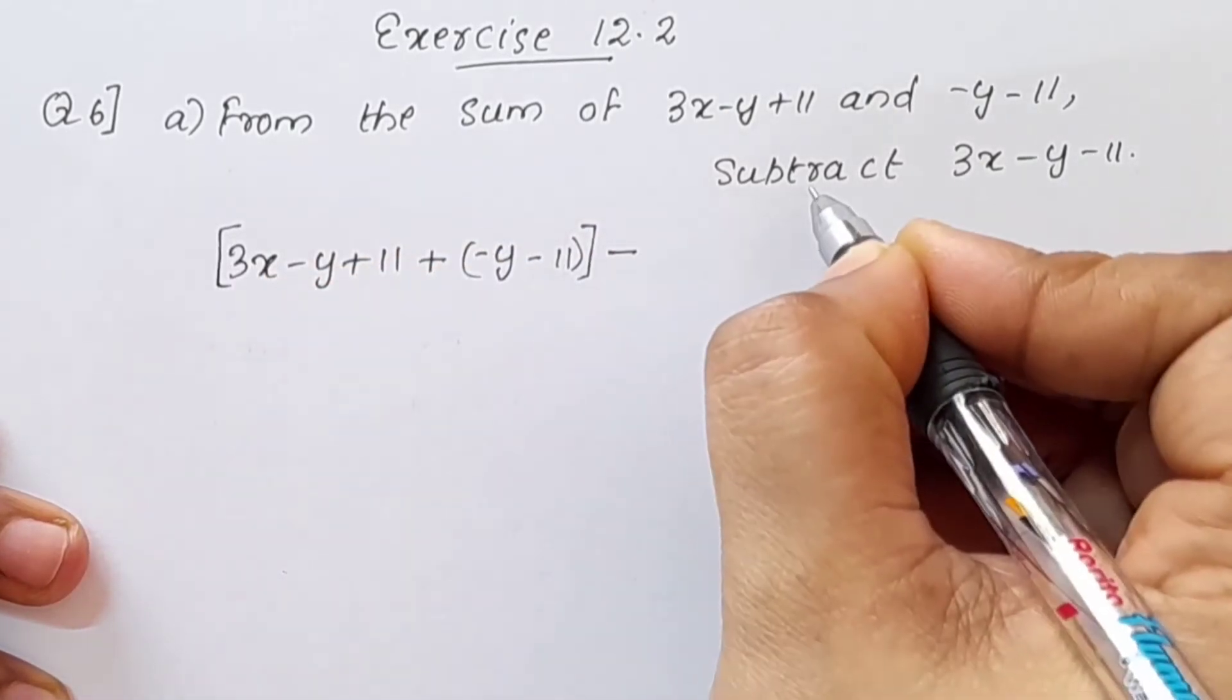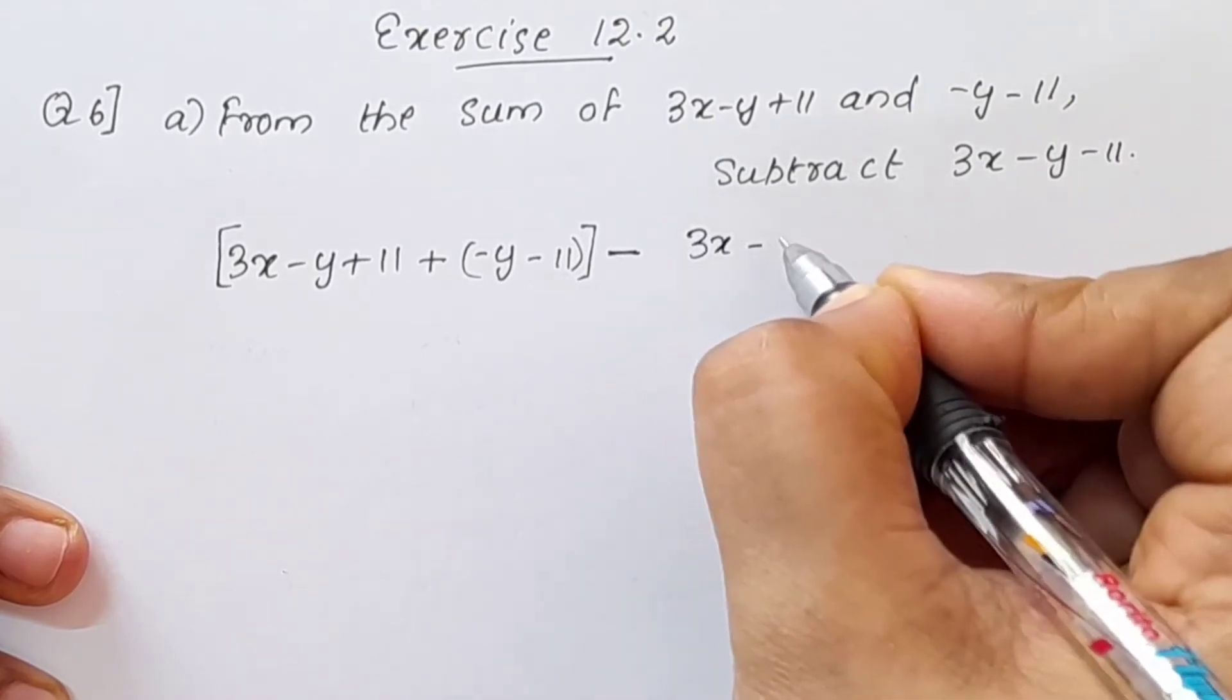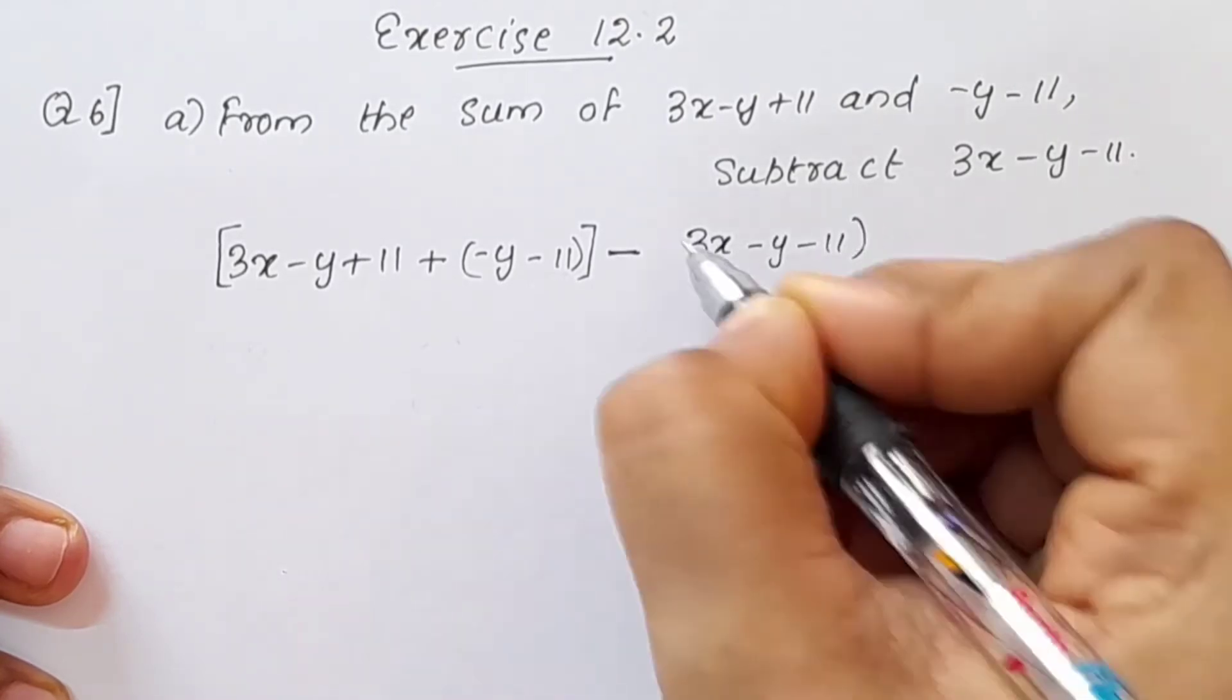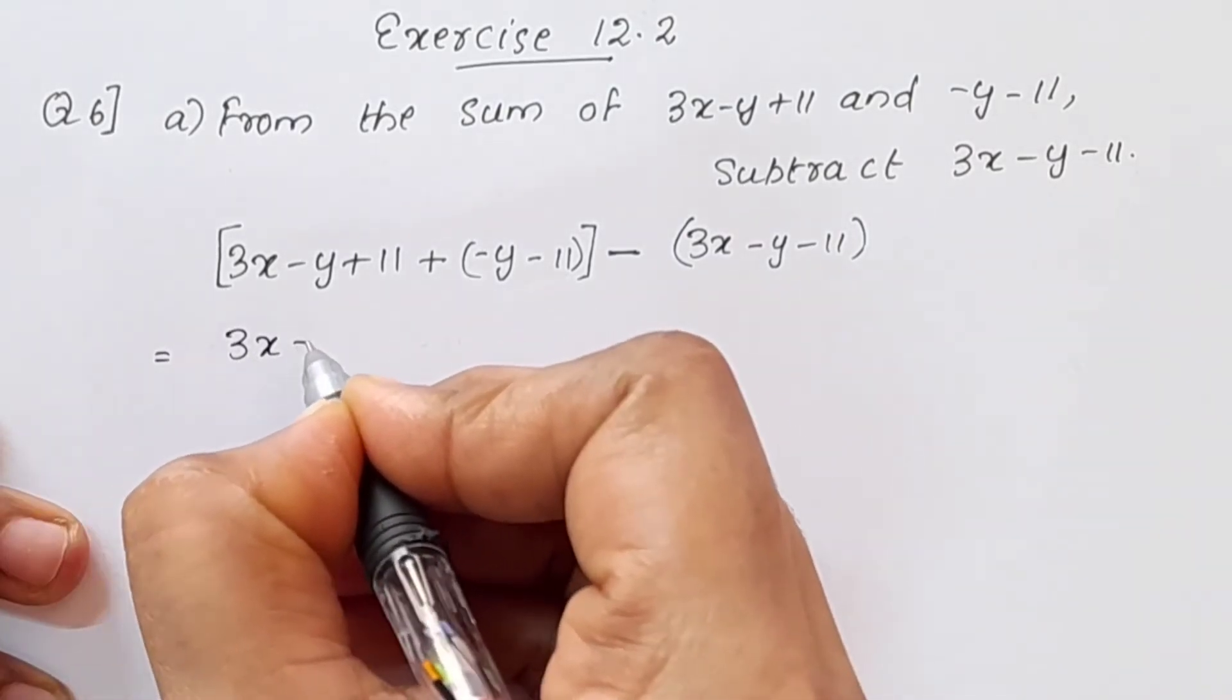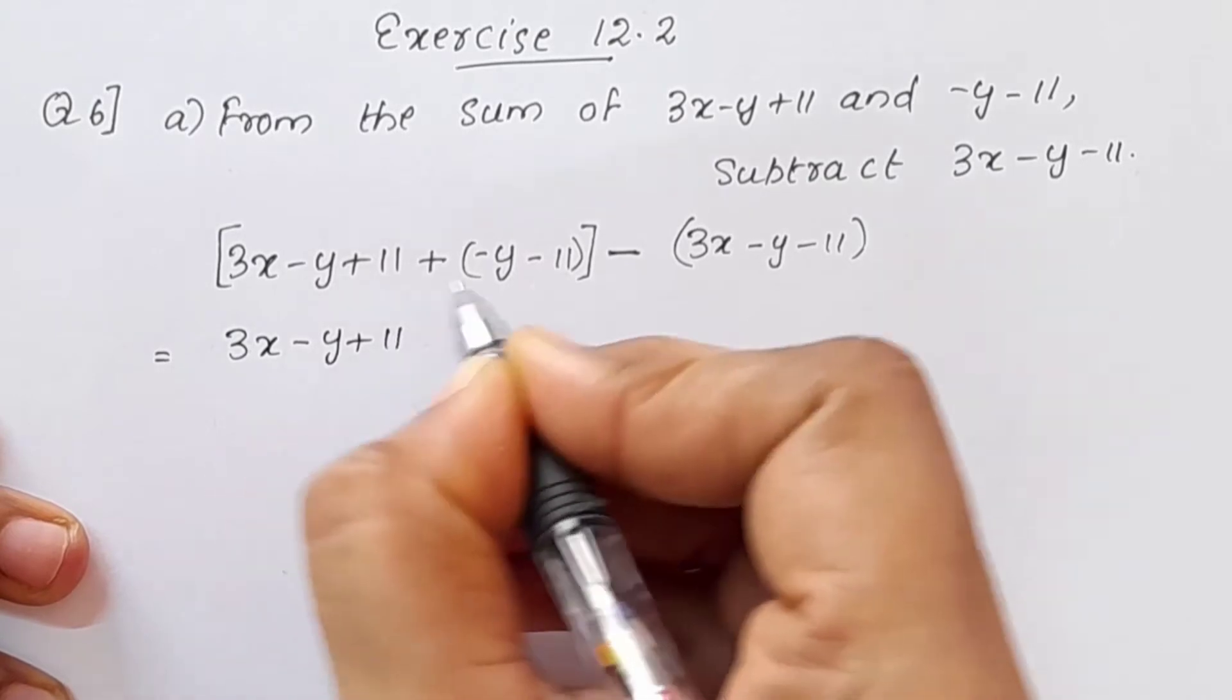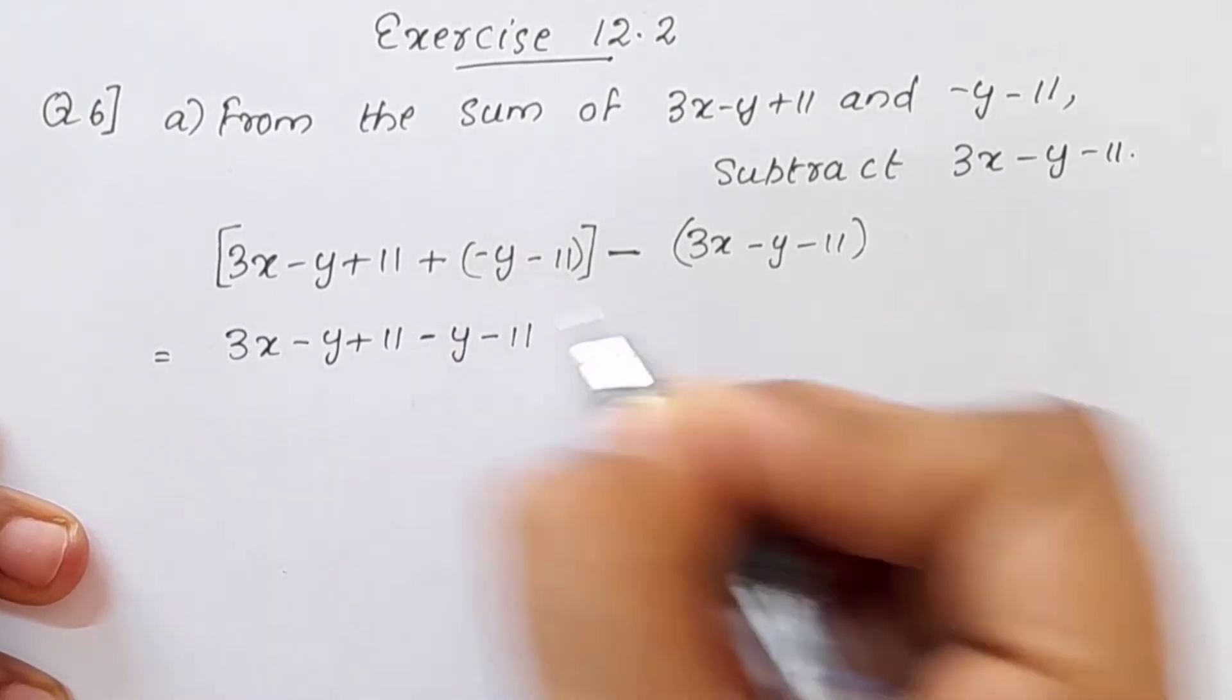Minus, subtract the equation. Minus 3x minus y minus 11 is equal to 3x minus y plus 11 plus minus y minus 11.